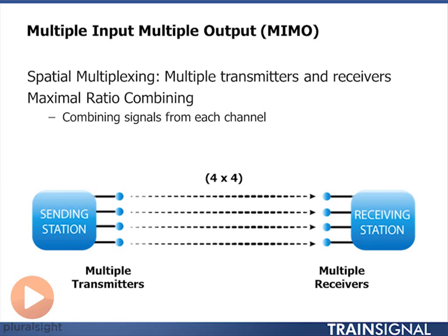Let's take a closer look at MIMO — it's called multiple input, multiple output antennas. You'll be surprised how many RF engineers get the definition of MIMO wrong. A lot of people will think the output is from the antennas and input is into the antennas, and that's not correct.